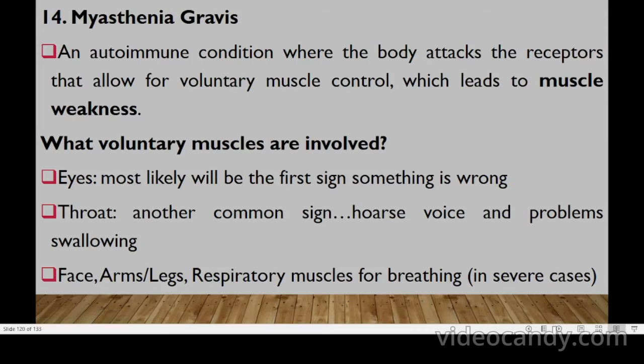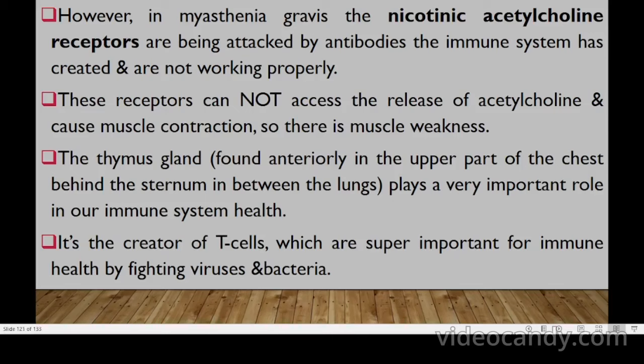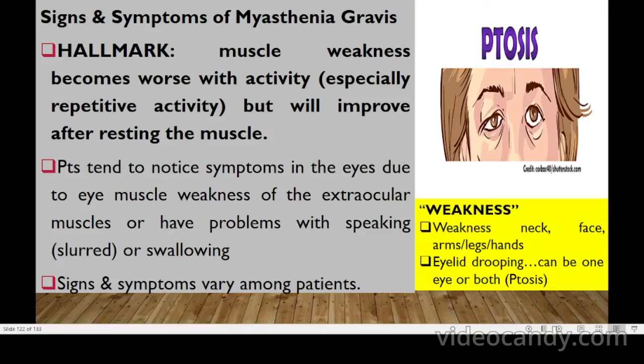Myasthenia gravis is an autoimmune condition where the body attacks nicotinic acetylcholine receptors that allow voluntary muscle control, leading to muscle weakness in the eyes, throat, arms, and legs. These receptors are attacked by antibodies, preventing acetylcholine from causing muscle contraction. The hallmark sign is muscle weakness that worsens with activity — especially repetitive activity — but improves after rest.